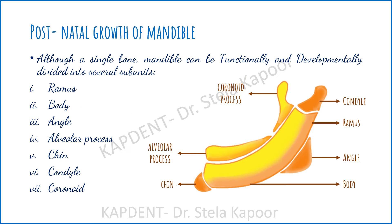Although the mandible is a large single bone, it can be divided functionally and developmentally into several subunits: the ramus, body, angle, alveolar process, chin, and the condyle and coronoid processes.